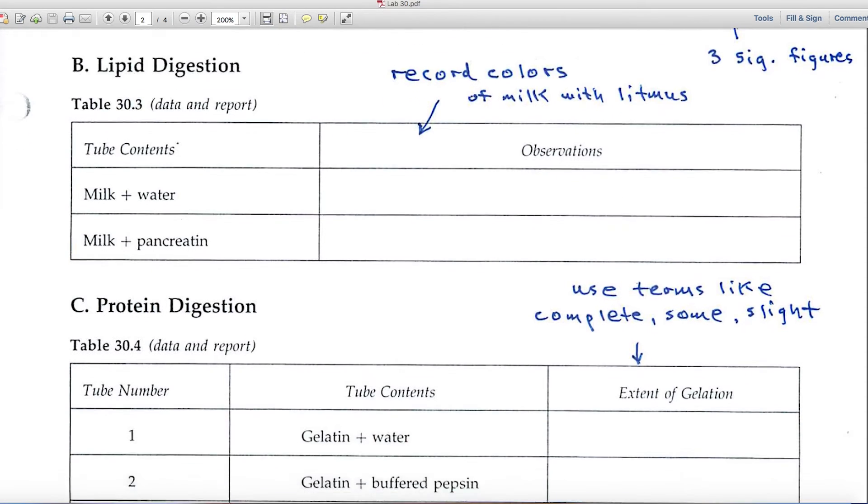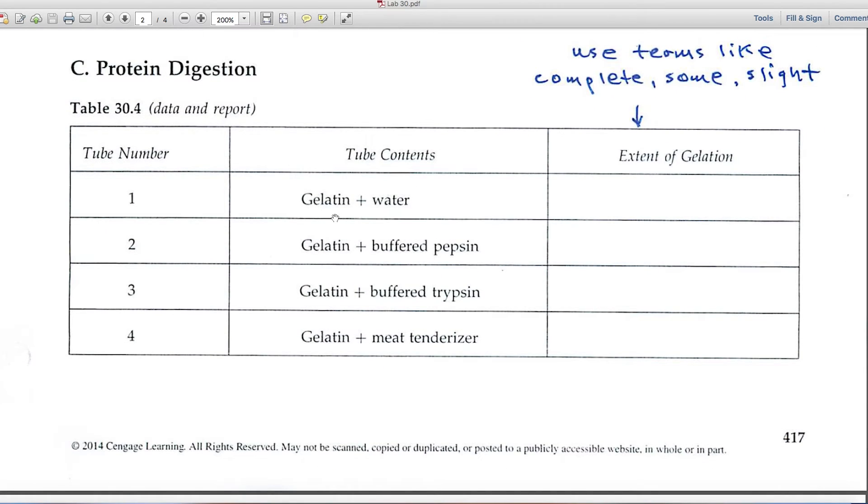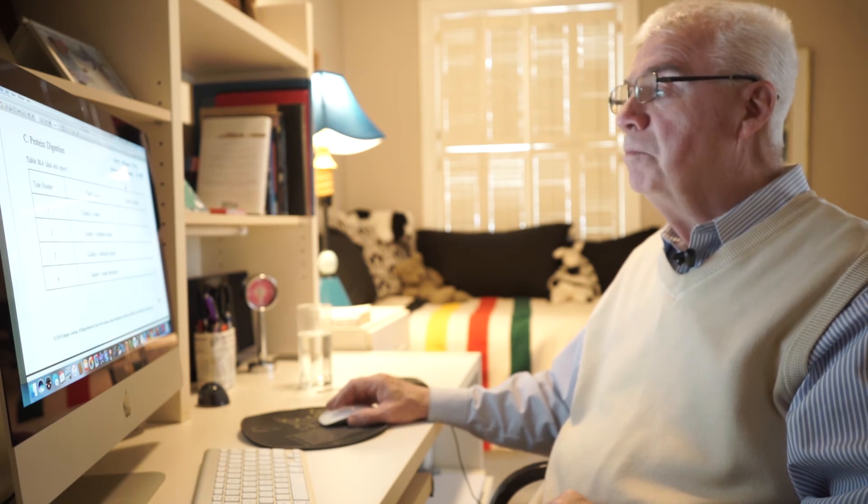In Part C, protein digestion, the standard in this case is gelatin plus water. Gelatin has protein in it, and when you mix gelatin with protein, it sets up much like jello would into a semi-solid.